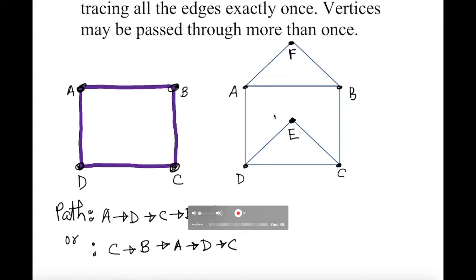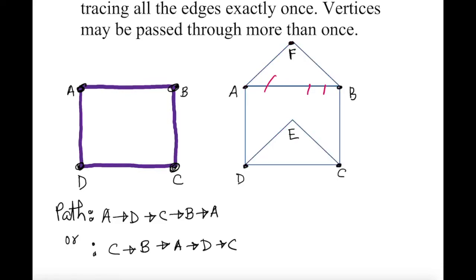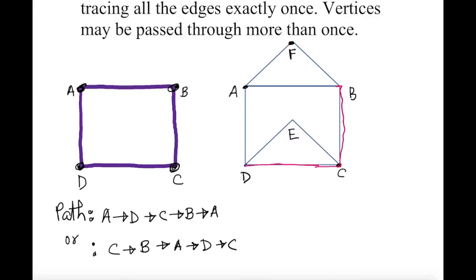Now let's analyze this next one. Is this traversable? Let me try to trace it. Going down, tracing it — if I go down, this one is left over, so I couldn't trace it. I'll try another way. Go down here, go down here — no, I cannot touch it again. I'm showing you all scenarios and still one edge is left over.